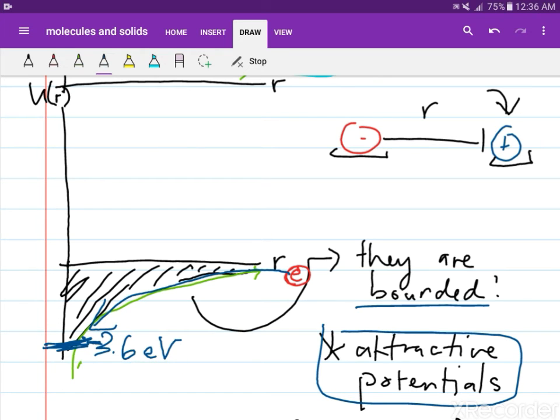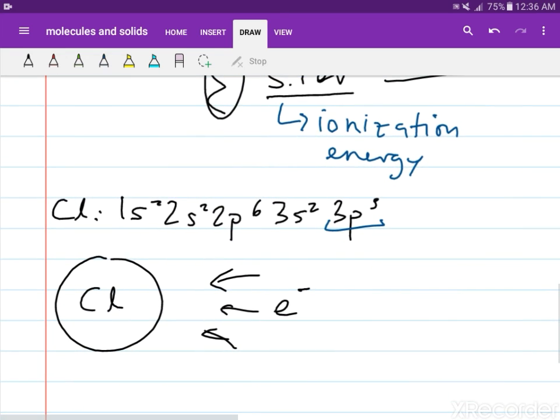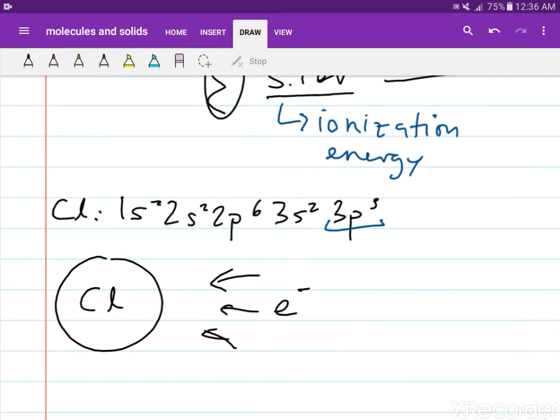Recall previously that negative potential energies mean that the particle is bound inside the potential. It is trapped inside the potential. So in order for this electron to go inside this chlorine atom, it needs minus 3.6 electron volts. This is called the electron affinity.